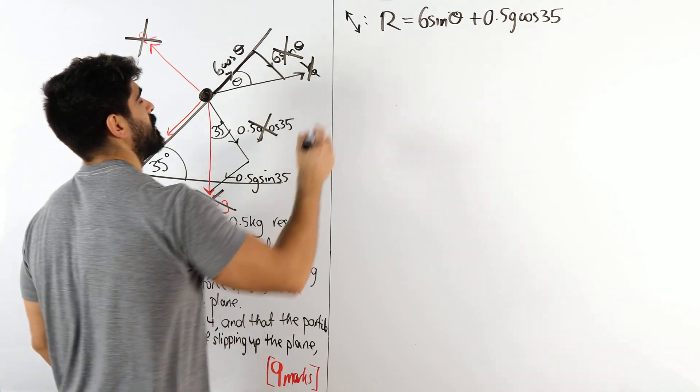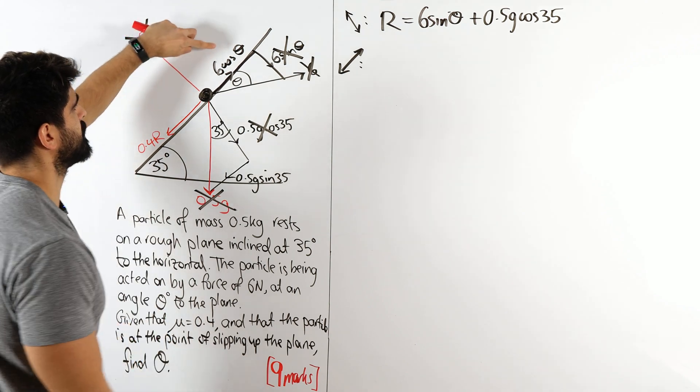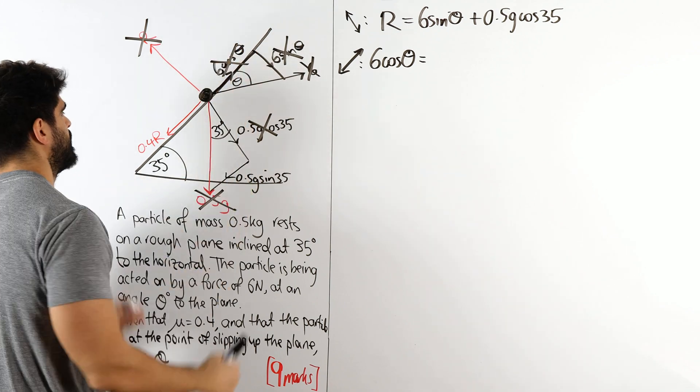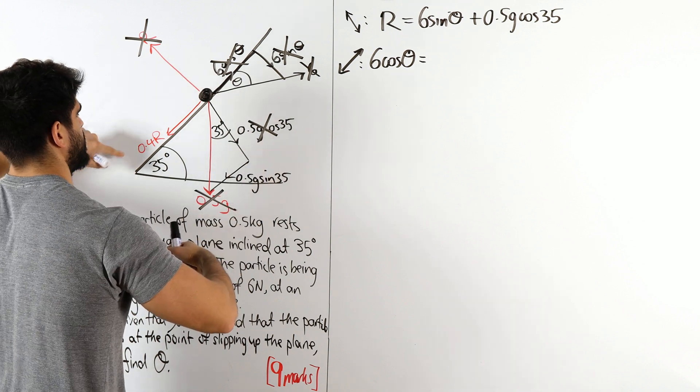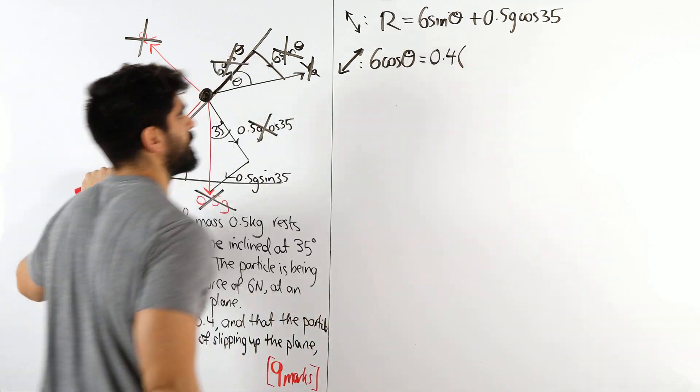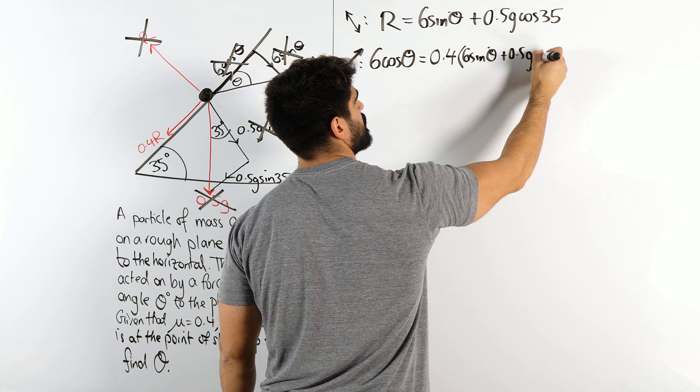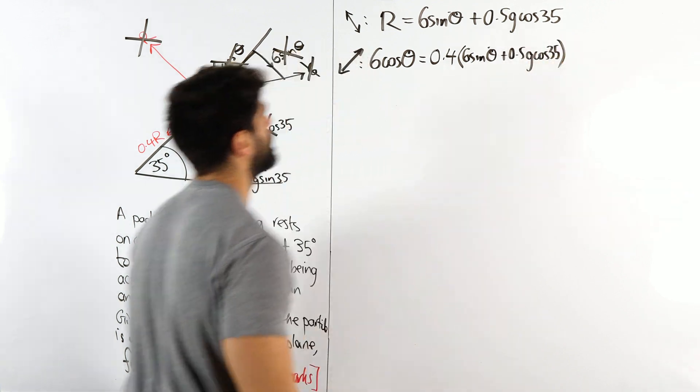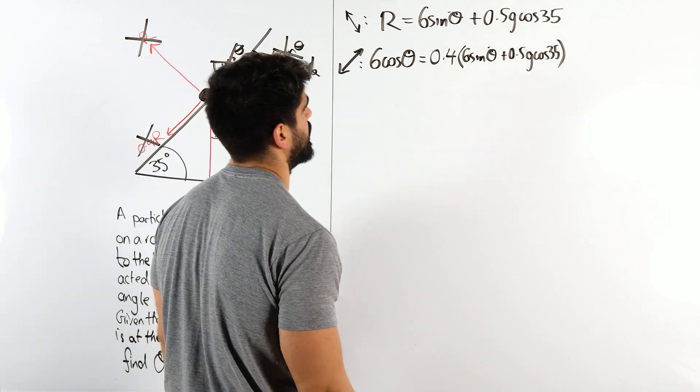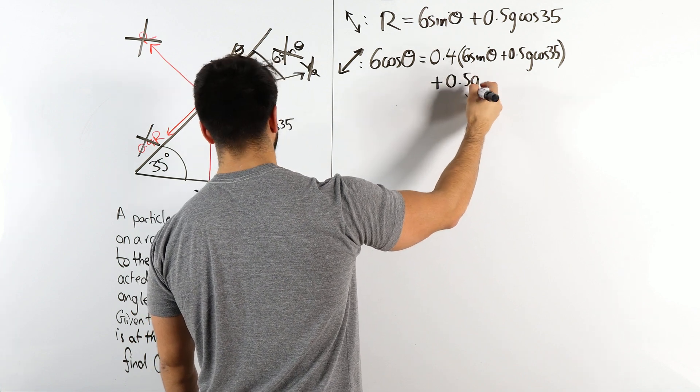Now let's look at up and down the hill. What's going on? They have to be equal. So you have 0.4r. Actually, let's do this one first. 6 cos theta is equal, because there's nothing else pointing up that hill, is equal to these two added together. They're both pointing in the opposite direction. So 0.4r and this. So 0.4r, I'm not going to write r. I'm going to write this. 6 sin theta + 0.5g cos 35. So that's that. And 0.5g sin 35. And just for space reasons, I'm just going to write that underneath here. 0.5g sin 35.